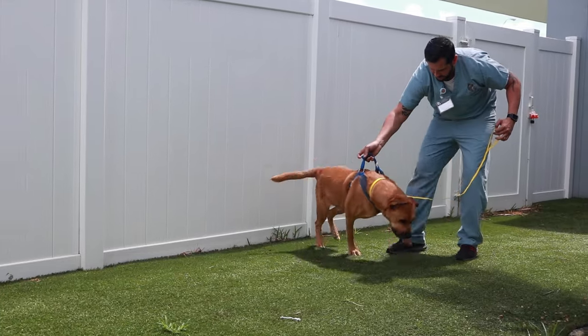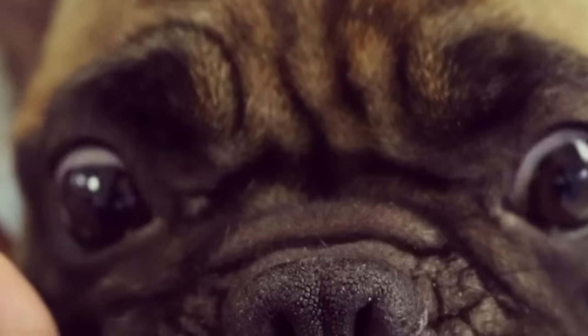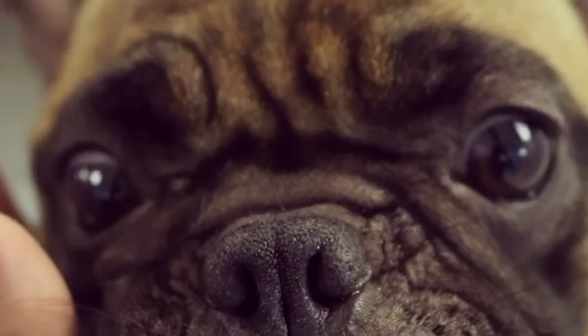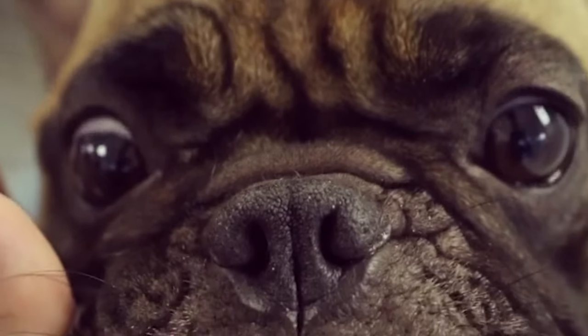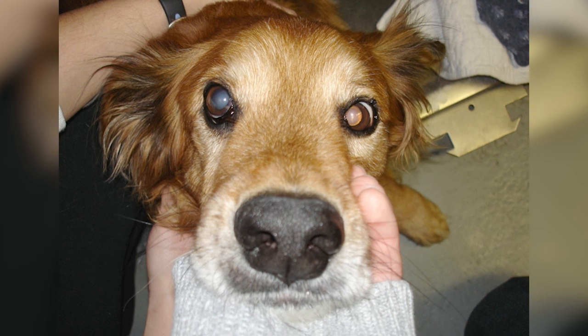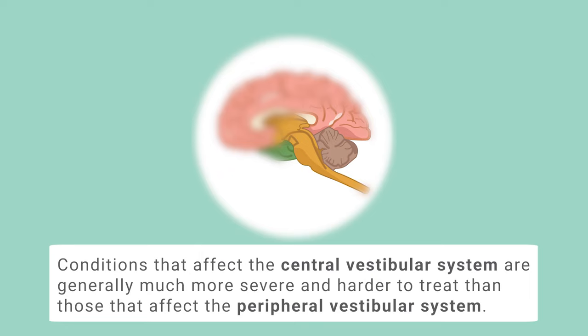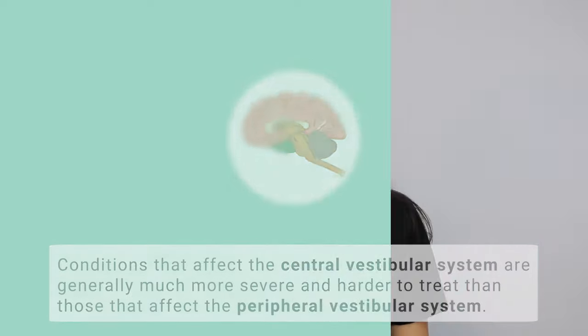Both peripheral and central vestibular disease can cause loss of balance, a head tilt, nystagmus — which is abnormal eye movement — and strabismus, which is abnormal eye position. Conditions that affect the central vestibular system are generally much more severe and harder to treat than those that affect the peripheral vestibular system.